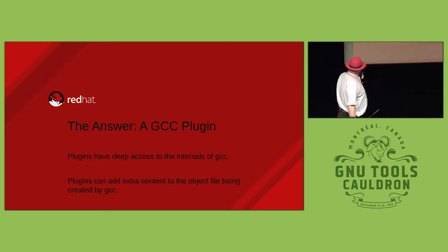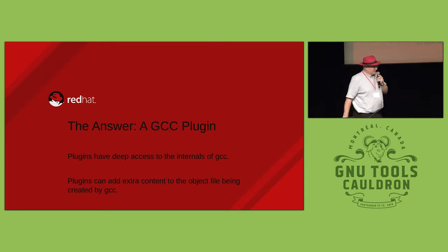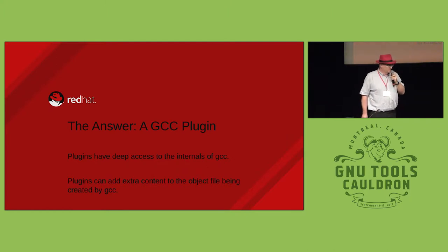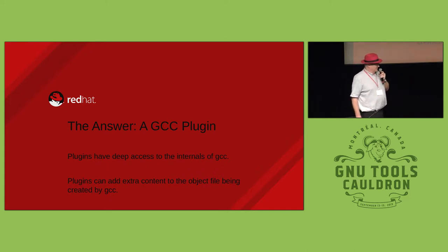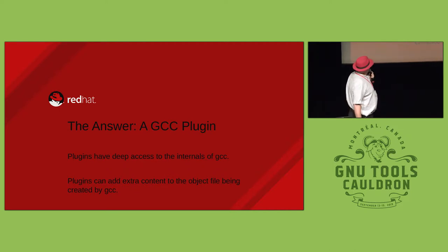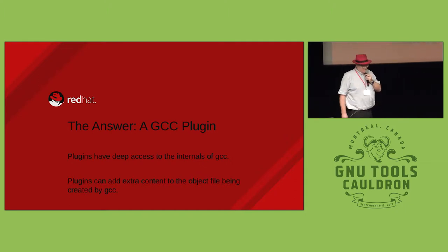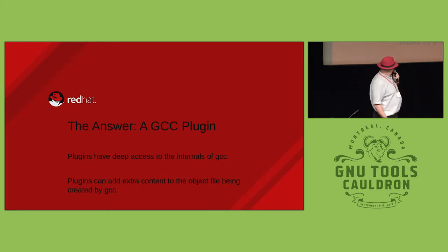The answer, of course, is a GCC plugin. GCC plugins are wonderful. They can do lots of things and have access to lots of stuff inside GCC - almost all the information we needed. Plugins can actually add extra stuff to the object files being created; they can emit their own assembler, create new sections, and do all kinds of things that maybe people didn't expect.